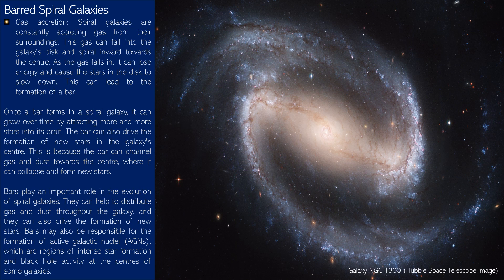Gas accretion: spiral galaxies are constantly accreting gas from their surroundings. This gas can fall into the galaxy's disk and spiral inward towards the center. As the gas falls in, it can lose energy and cause the stars in the disk to slow down, and this can lead to the formation of a bar.